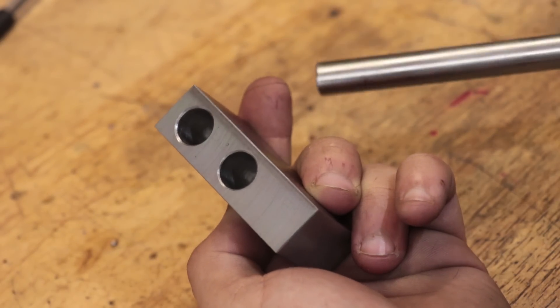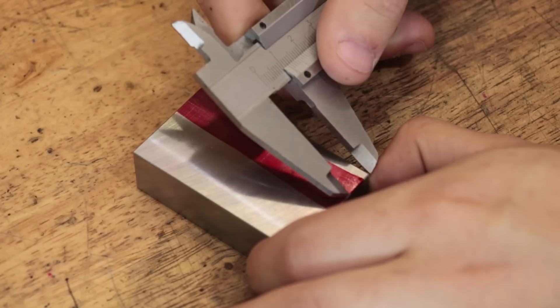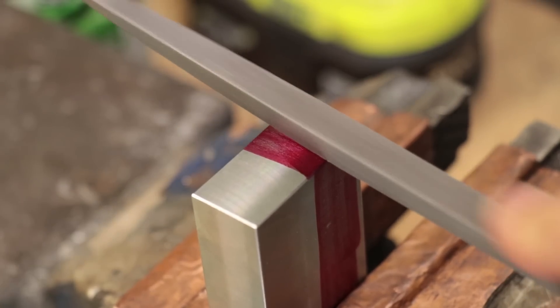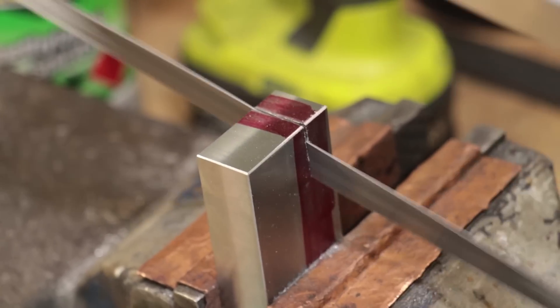With the holes drilled, I can then mark out and cut the bottom off. The bottom part will eventually become the moving jaw if you will, and I figured it would be easiest to do it this way because it will help ensure that the holes perfectly line up.